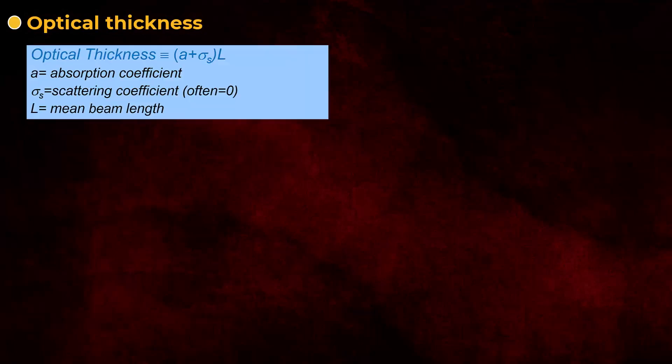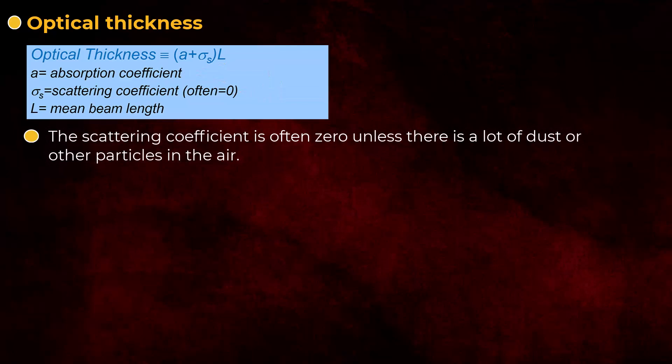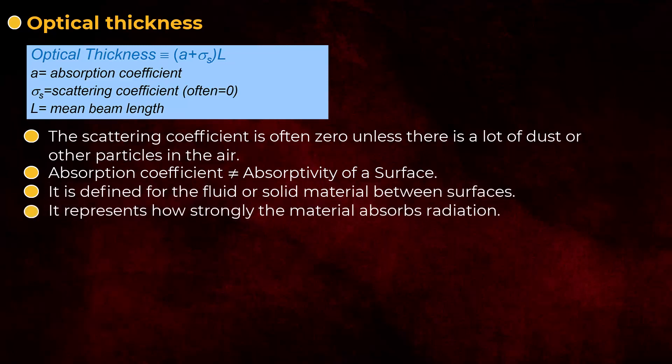One important factor is the optical thickness. It is defined as the product of the mean beam length, L, which can be considered to be the distance between two walls, and the sum of the absorption and scattering coefficients, alpha and sigma. The scattering coefficient is often zero unless there's a lot of dust or other particles in the air, and an important point about the absorption coefficient is that it is different from the absorptivity of a surface. Instead, it is defined for the fluid or solid material between surfaces, and it represents how strongly the material absorbs radiation.